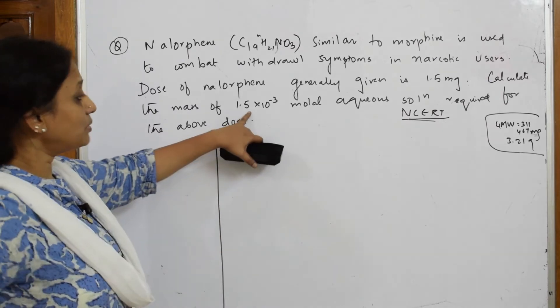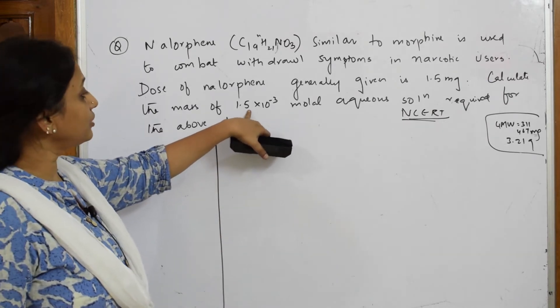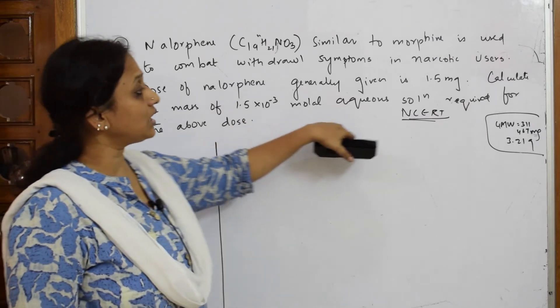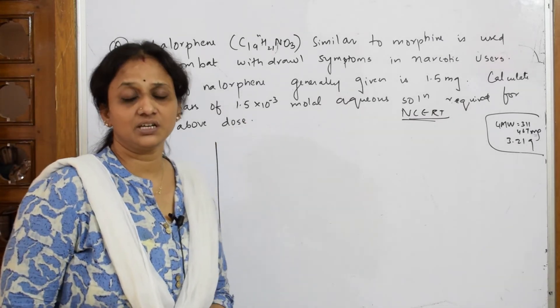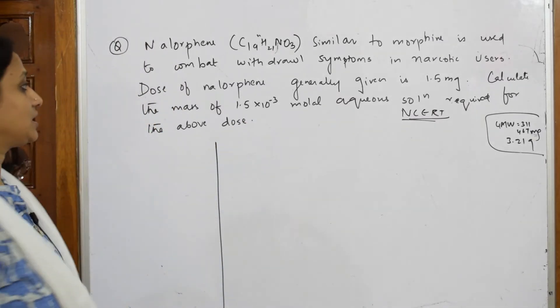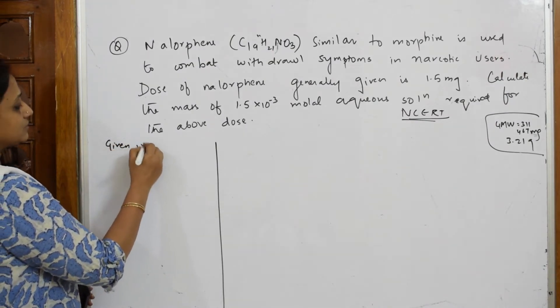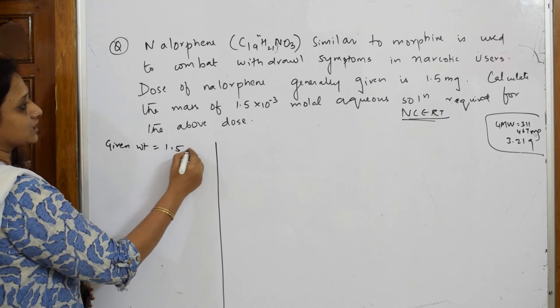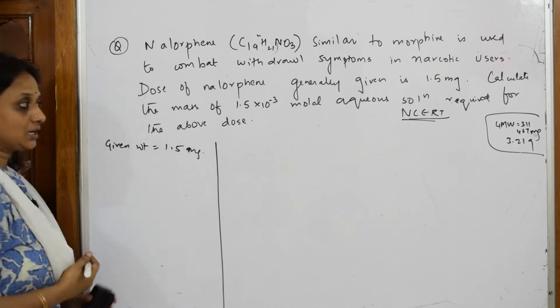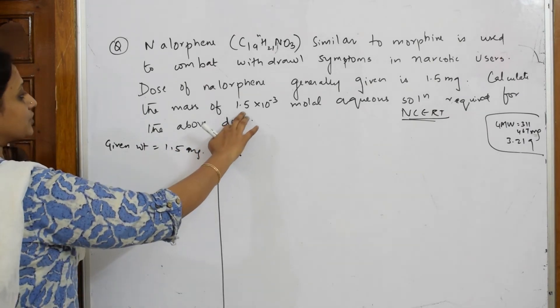How much will be the weight when 1.5×10^-3 molar aqueous solution is administered? I have to calculate the mass. First, let's write the given weight - they gave me 1.5 milligrams.